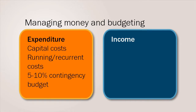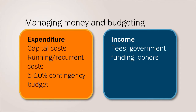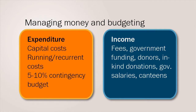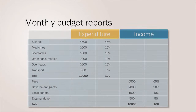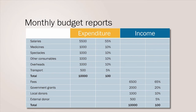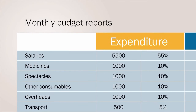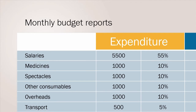Budgets should list all of a program's sources of income. These include fees, funding from government, local and international donors, in-kind donations, government salaries, income generated from canteens, spectacle sales, and so on. An itemized budget layout for each activity is established in order to be able to update or vary estimates and quantities. Information on both expenditure and income is part of a monthly report that should be produced for management. The percentage of each line item that has been spent or collected is calculated; items worth ten percent or more are especially important.